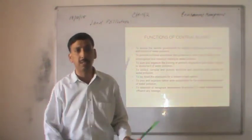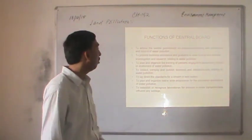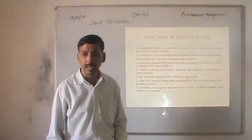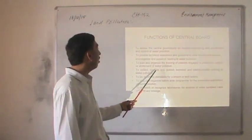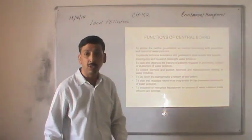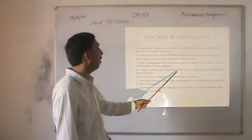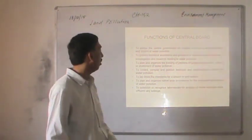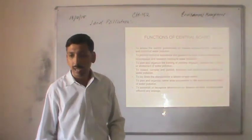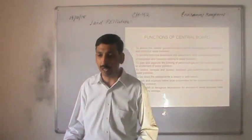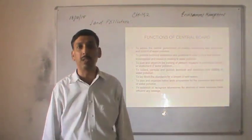Functions of the central board include: to advise the central government on matters concerning the prevention and control of water pollution; to provide technical assistance and guidance to state boards and conduct research relating to water pollution; to plan and organize training of persons engaged in prevention and control of water pollution; to collect, compile and publish technical and statistical data relating to water pollution; to lay down standards for stream or well waters; to plan nationwide programs for prevention and control of water pollution; and to establish or recognize laboratories for the analysis of water samples.